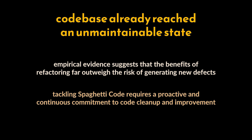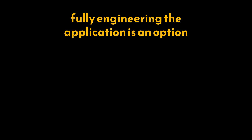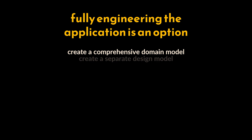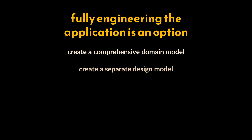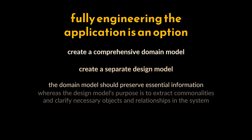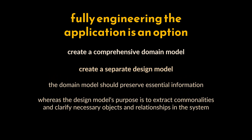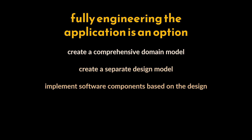If we have the luxury of fully re-engineering a spaghetti code application, start by conducting a thorough object-oriented analysis process to create a comprehensive domain model, regardless of the level of understanding of the domain. Once the domain model is established, create a separate design model. While the domain model can be a starting point, it should preserve essential information. The design model's purpose is to extract commonalities and clarify necessary objects and relationships in the system.